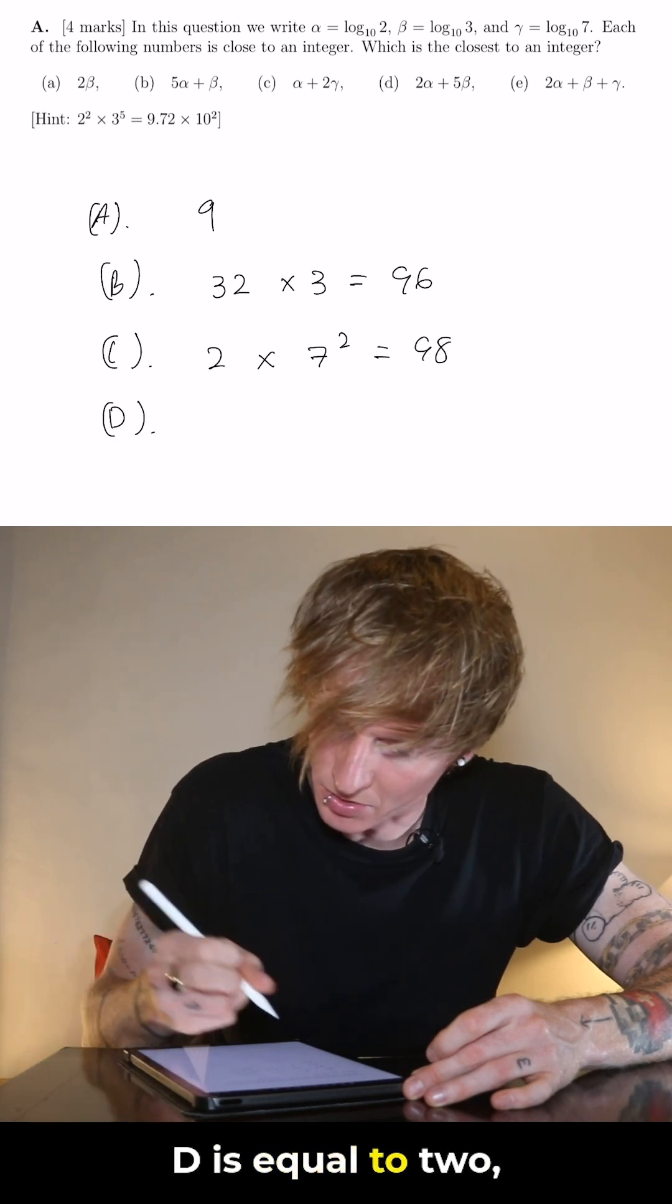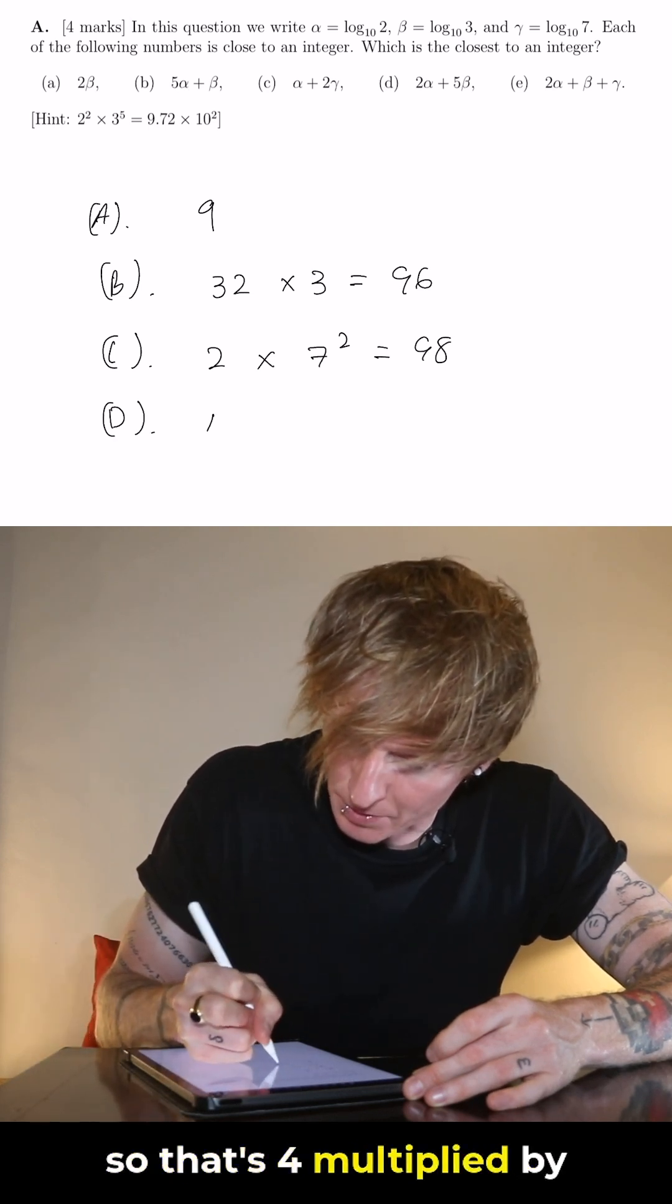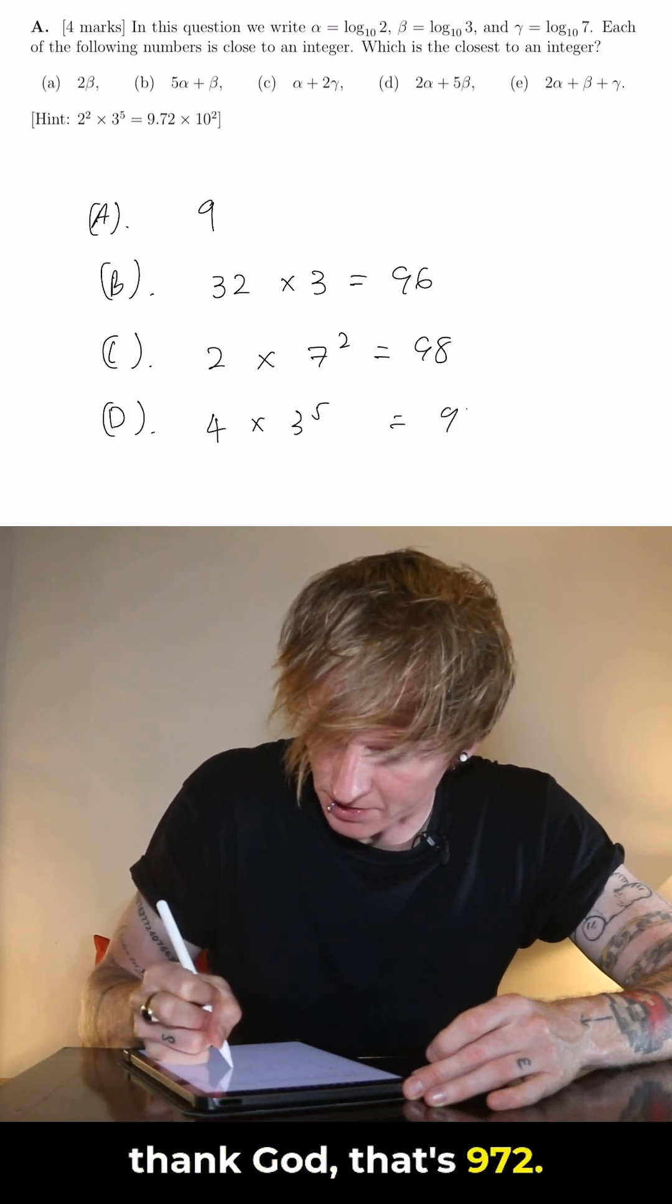D is equal to 2 alpha plus 5 beta so that's 4 multiplied by 3 to the power of 5, they give me that answer thank god that's 972.